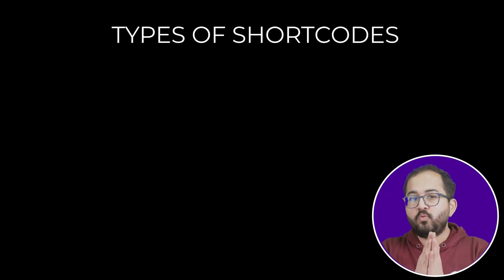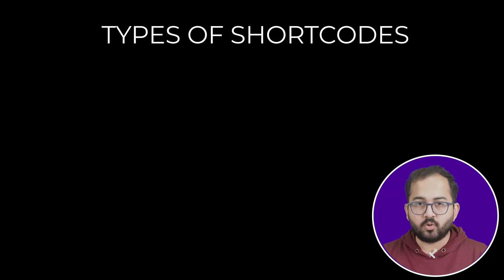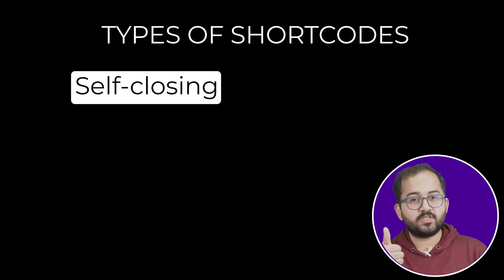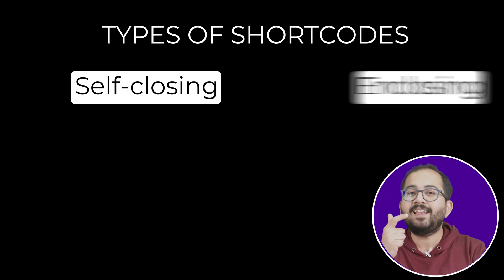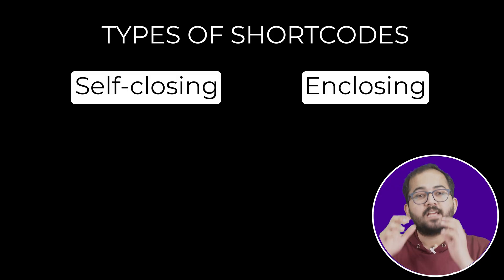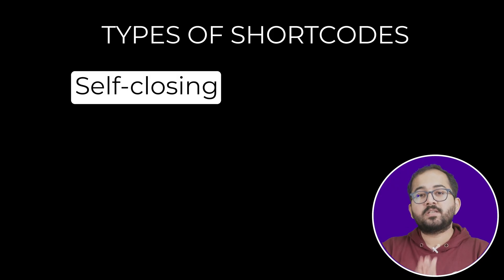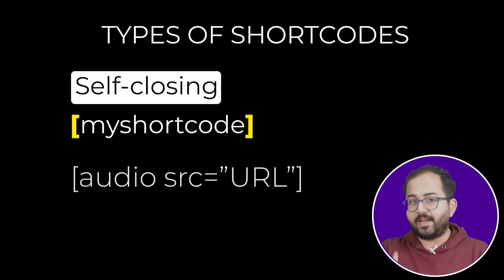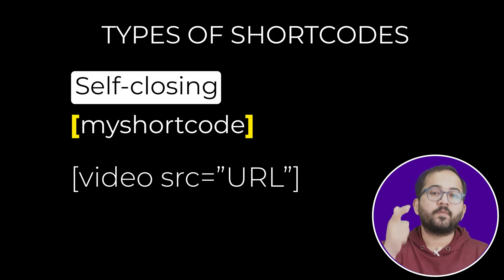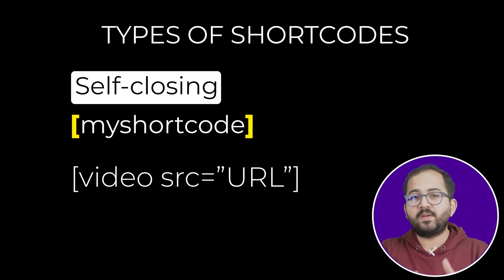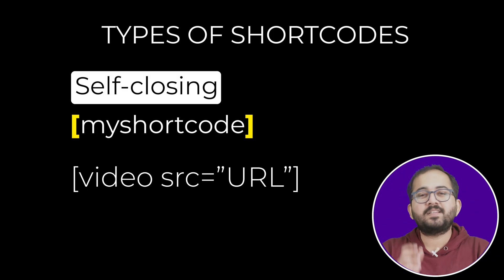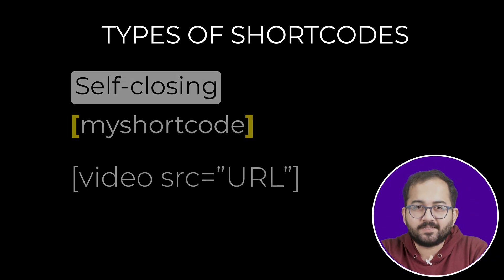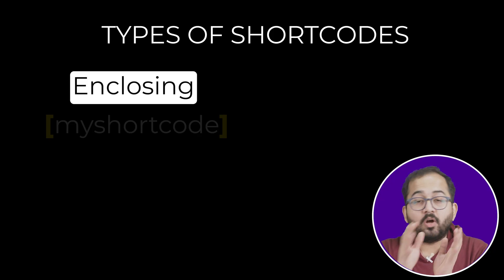Before we get into all that, let's understand the two main types of shortcodes in WordPress: self-closing shortcodes and enclosing shortcodes. Self-closing shortcodes don't need an end tag. These are for things like audio, video, and gallery. You just place the shortcode in your post or page and WordPress takes care of the rest.